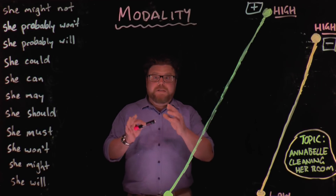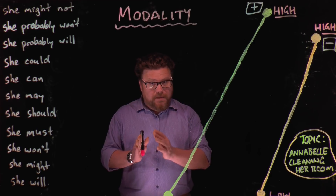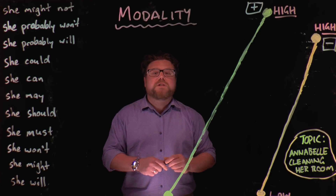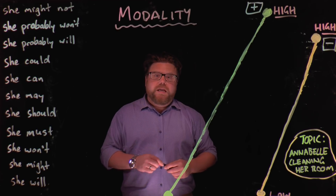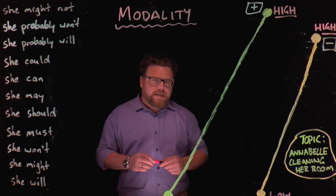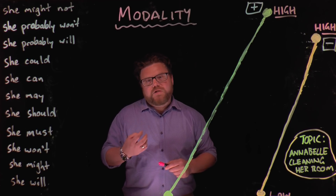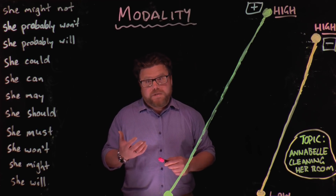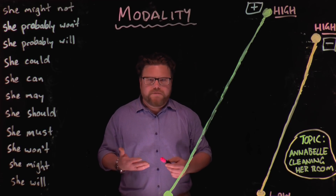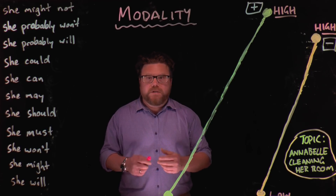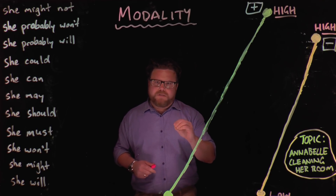Welcome to another lesson on modality in language. Just a reminder, we're not talking about modality in visual literacy — we're talking about modality in language, in the words that we use. When we're talking about modality in language, we're talking about the degree of certainty: how certain we are about the possibility of something happening, or how strong an obligation is for us or the person we're talking about to do something. It's about those degrees of certainty.